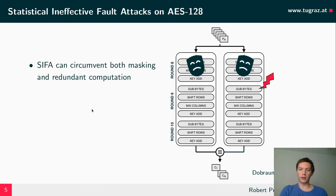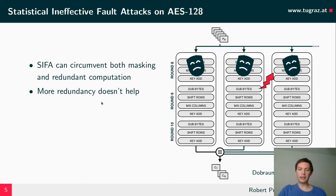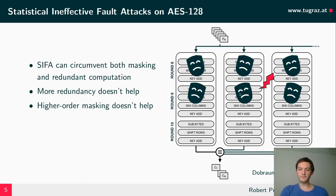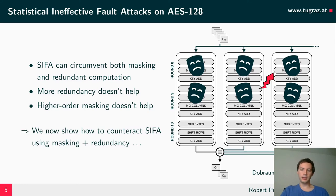To sum up briefly, SIFA can circumvent both masking and redundant computation. Adding more redundancy doesn't really help because we only perform one fault injection and only exploit correct computations. Masking doesn't work either, and this also holds for higher-order masking — adding additional shares does not alleviate this problem. In the remainder of this talk, I will explain how to counteract SIFA using a careful combination of masking and redundant computation.